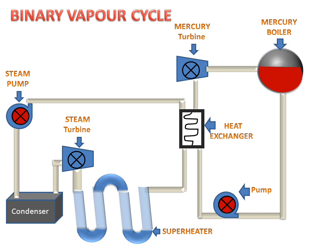Now we will see the working of the binary vapor cycle. Vapor will form in the mercury boiler. These mercury vapors will go towards the mercury turbine and strike on the blades of the mercury turbine, causing the turbine to start rotating. These vapors will then go to the heat exchanger.